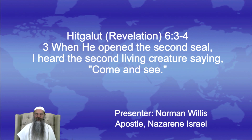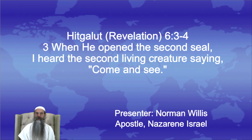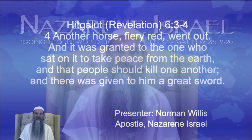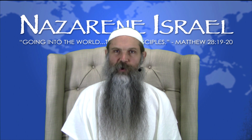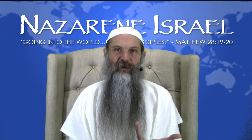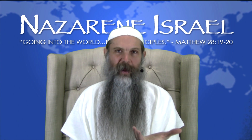Let's take a closer look at the red horse. Revelation 6:3-4 says, 'When he opened the second seal, I heard the second living creature saying, Come and see. Another horse, fiery red, went out, and it was granted to the one who sat on it to take peace from the earth, and that people should kill one another, and there was given to him a great sword.' The identity of Esau ties to the color red, which is blood.